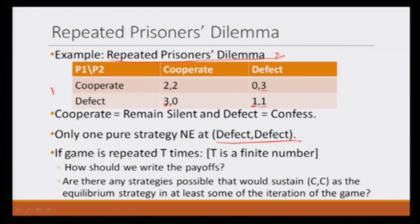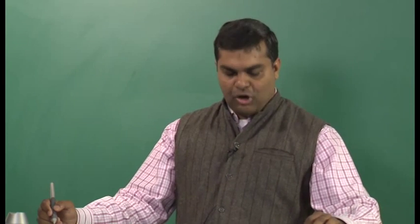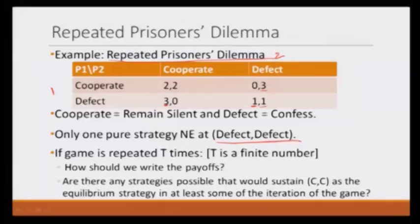What we are going to add here is: if this game is repeated t times, we will first discuss the scenario in which t is finite. We have to think about how to write the payoff — we will devise some mechanism, probably simple addition or discounted addition. More importantly, the question would be: are there any strategies possible that would sustain cooperation? Remember, if the prisoner's dilemma game is played only once, both players would defect and would not cooperate. So the question is: are there strategies possible that would sustain cooperation as the equilibrium strategy, at least in some iterations of the game — if not towards the end, then how about in the beginning?